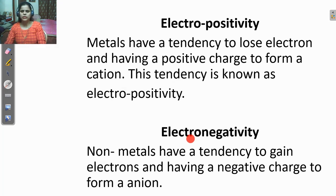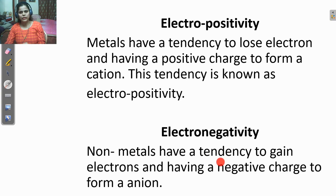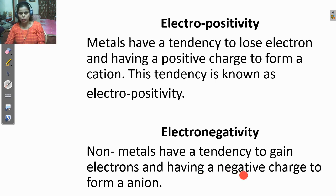What is the electronegativity? Electronegativity is the property of the non-metals. Non-metals have the tendency to gain electrons. They gain electrons, and that is why they have a negative charge to form the anion. This tendency is known as electronegativity.